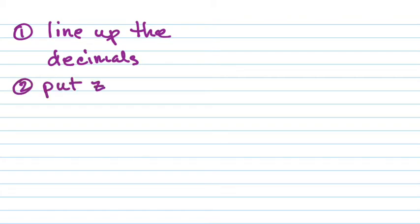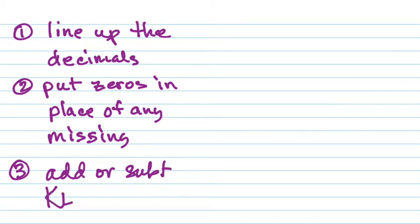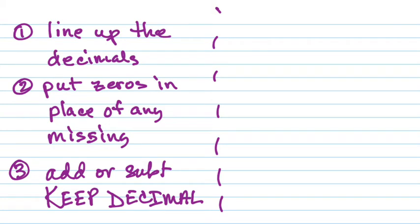Rule one: line up the decimals. Now, put zeros in place of any missing numbers, and I'll show you what that means. And then finally, add or subtract, keep the decimal. It never moves, so we keep it in the same space where it was in the beginning.